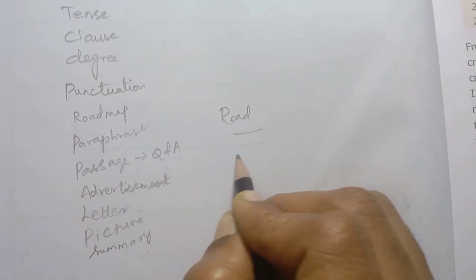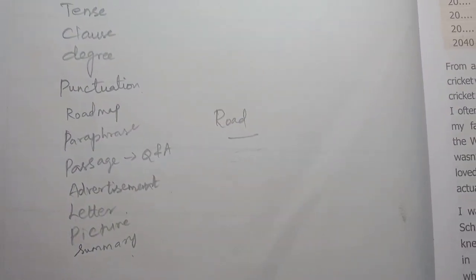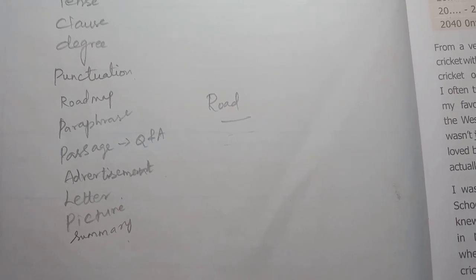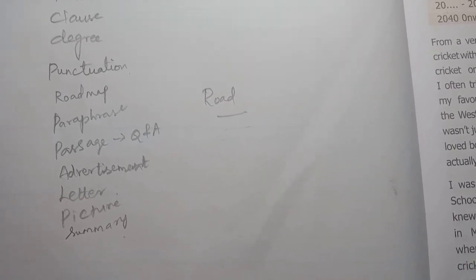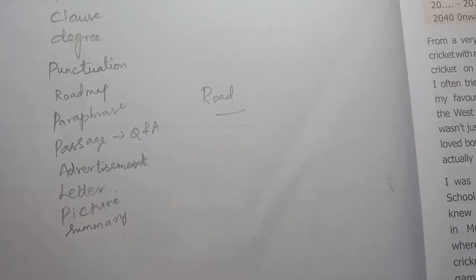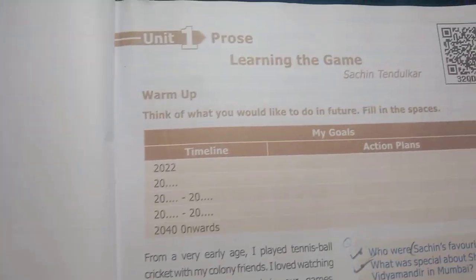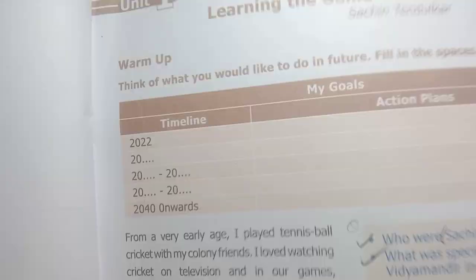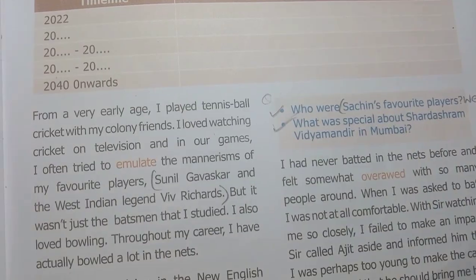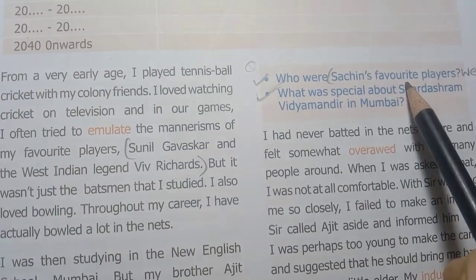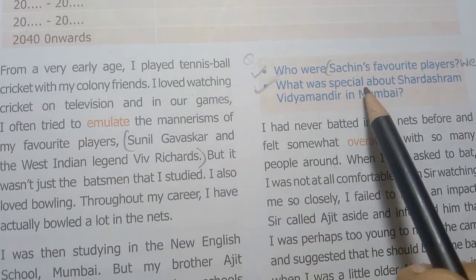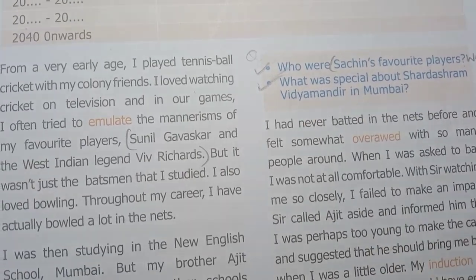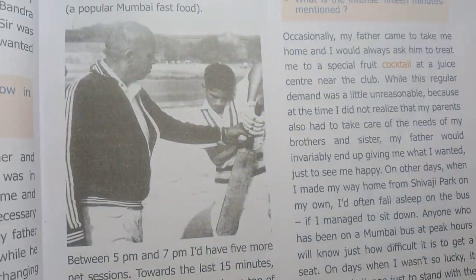If you gather points, you need to follow the directions. Unit 1 Prose: Learning the Game. Page number 1 — who were Sachin's favourite players? That is important. What was special about Shardashram Vidya Mandir in Mumbai? That is an important question.